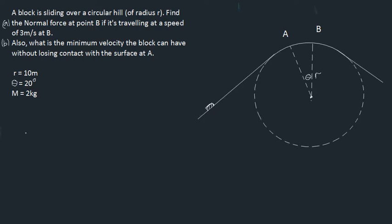So here's the particular problem. If this is point B, right here at the very top of our hill, my question to you is: what is the normal force acting on our block at the top of the hill if our block is traveling at a velocity of 3 meters per second?